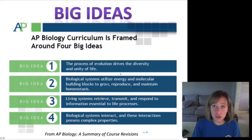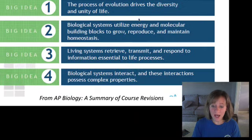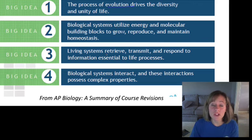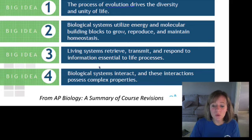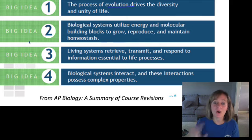Here is the framework for this new AP Biology class — these next slides are directly from the College Board. There are four big ideas. The first one has to do with evolution. The second one is about how living systems need energy and molecular building blocks to grow. The third is all about information transmission — mostly DNA, RNA, and genetics. And the last one is more ecology: the idea that all systems are constantly interacting and that these interactions possess complex properties. I will always be referring to what big idea we are on today.